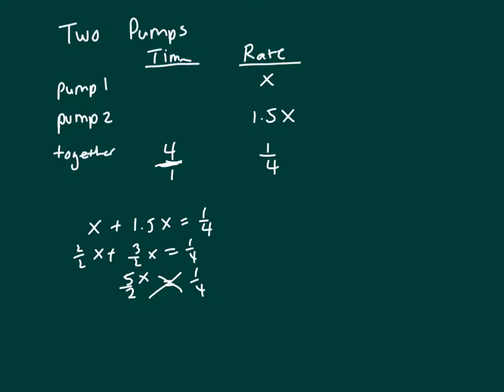And that gives me 5x times 4 is 20x, equals 2 times 1, which is 2. So that's x equal 2 over 20, or one-tenth.